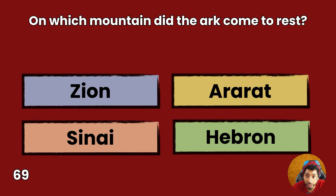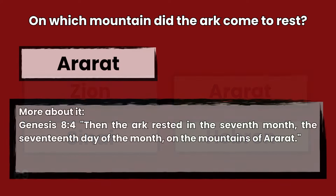Question 69: On which mountain did the ark come to rest? Zion, Ararat, Sinai, or Hebron? Answer: Ararat. Genesis 8:4 — Then the ark rested in the seventh month, the seventeenth day of the month, on the mountains of Ararat.